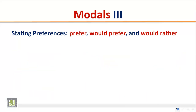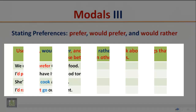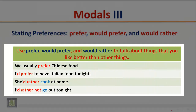Stating preferences: 'prefer,' 'would prefer,' and 'would rather.' Use these to talk about things you like better than other things. Examples: 'We usually prefer Chinese food.' 'I prefer to have Italian food tonight.' 'She'd rather cook at home.' 'I'd rather not go out tonight.' The first example implies that we prefer Chinese food more than other kinds of food.